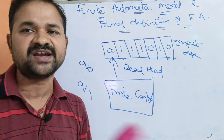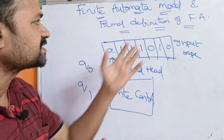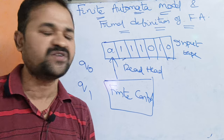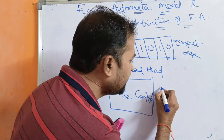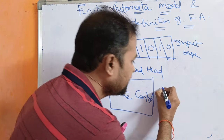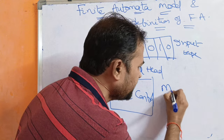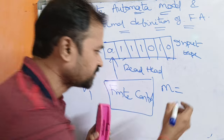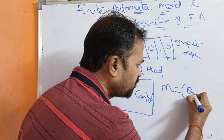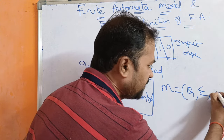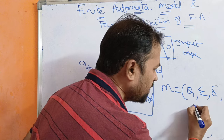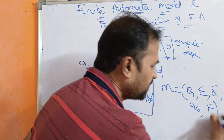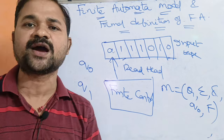This is about the finite automata model and its diagram. Now let us see the formal definition of finite automata. We denote a finite automaton as M. In order to define finite automata, we mainly use five tuples: Q, sigma, delta, Q0, and F.